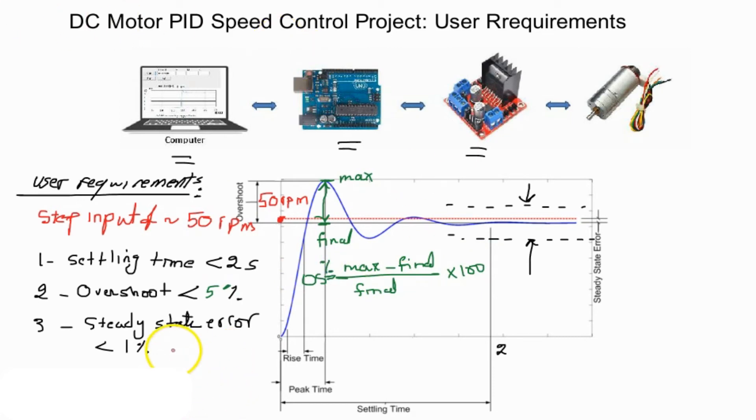Now the steady state error should be less than 1 percent, and this is defined as the difference between the input step value which is shown in red and the final value which is shown in blue. The difference between these two is the steady state error and it should be less than 1 percent.